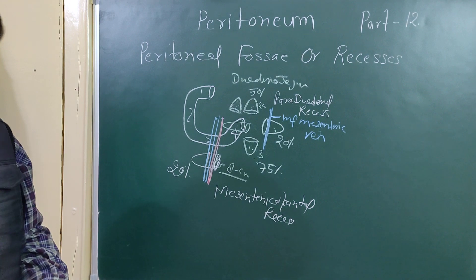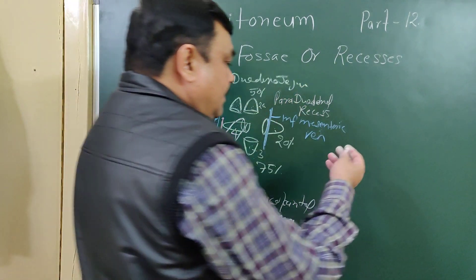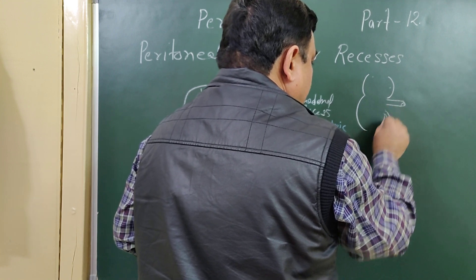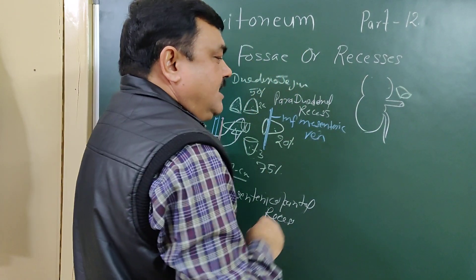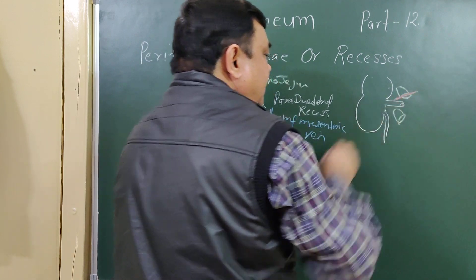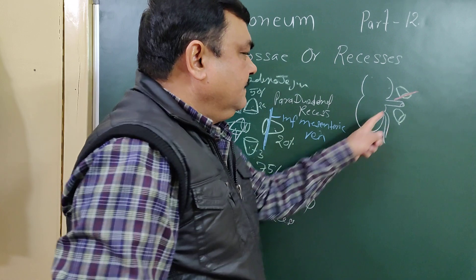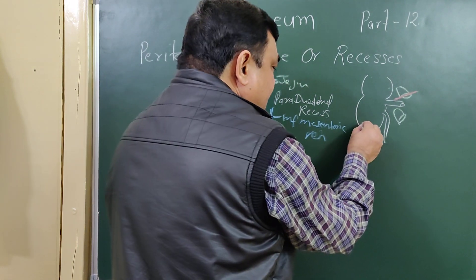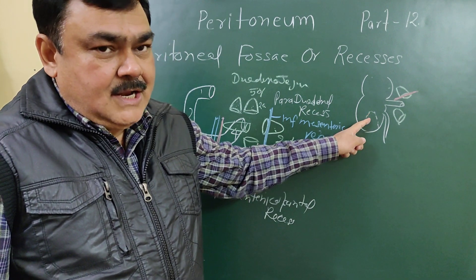The recesses in relation to the cecum include the superior ileocecal recess and the inferior ileocecal recess. One artery — the ileocolic artery — runs along the anterior margin of the superior ileocecal recess. There is also the retrocecal recess, which sometimes contains the appendix.